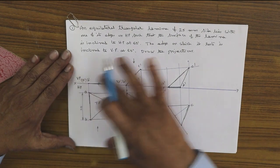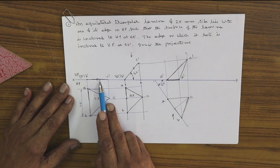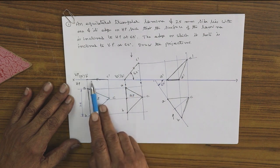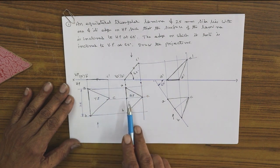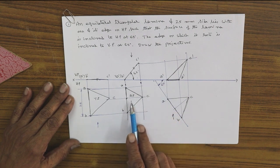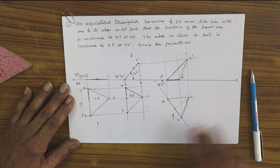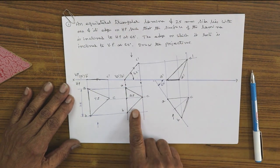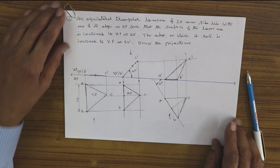In drawing these figures, one important rule must be followed: when you change the position of the front view to the given angle, pin to pin and dot to dot, you must maintain the same size. Similarly, when you draw the apparent triangle to the given angle of 60 degrees, pin to pin and dot to dot, same size must be preserved. When you project the new front view, you get the top view; when you project the new top view, you get the front view. That is the final answer.